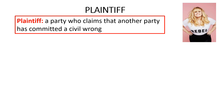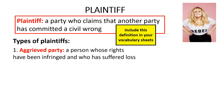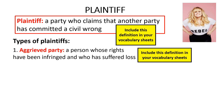A plaintiff is a party who claims that another party has committed a civil wrong. Look down the left-hand side of your vocabulary sheets, find the term 'plaintiff' and write this definition in there. The first type of plaintiff is the aggrieved party. An aggrieved party is a person whose rights have been infringed and who has suffered loss. Find the term 'aggrieved party' on your vocabulary sheets and write this definition in there.